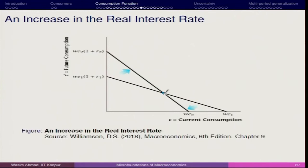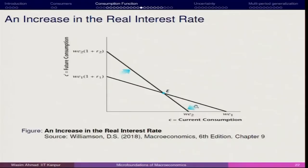At point E the budget line pivots. Pivoting means that if you have an increase in the real interest rate, your endowment in the current period is going to come down and you try to get more in the future. If the rate of interest is going to be higher, you try to save more in the current period itself — your current consumption tends to be lower, and your future consumption will be higher because whatever you save here is going to be transformed: you get 1+r.